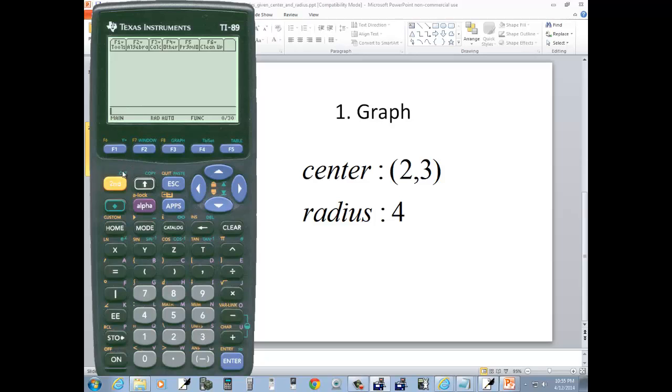Now to graph this, first thing I'm going to do is go to diamond F1 to go to Y equals. I'm going to clear out Y1. That's gone. Now I exit out, so I do second escape.